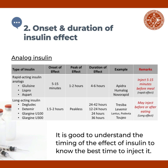There are two types of insulin analogs: rapid-acting and long-acting insulin analogs. The onset of effect for rapid-acting insulin analogs is at 5 to 15 minutes, peak effect at 1 to 2 hours, and duration of effect at 4 to 6 hours. Examples are insulin glulisine or Apidra, insulin lispro or Humalog, and insulin aspart or NovoRapid. These are all injected 5 to 15 minutes before meals.